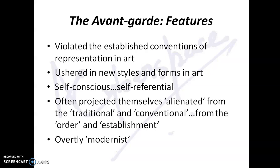Modernists challenged that romantic notion of the artist as the originator of everything, as a unified self who would generate unified, coherent meaning. According to modernists, artists should not generate coherent meaning. A work of art would not give you coherence but a sense of disorder, a sense of chaos — sometimes to shock you out of your complacency. This can be associated with Bertolt Brecht's famous epic theatre, or for that matter the rhythmical fragmentation in The Waste Land. In this way they ushered in new styles and forms in art, and they were very self-conscious and self-referential — the artwork would refer to itself as a form of art, not as something transparent in nature.